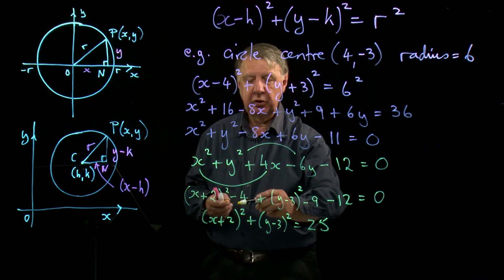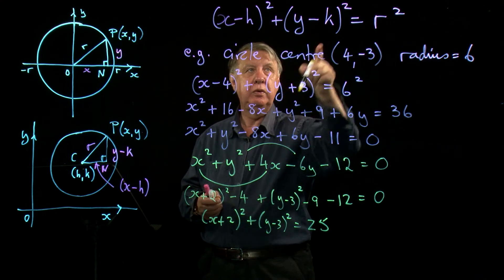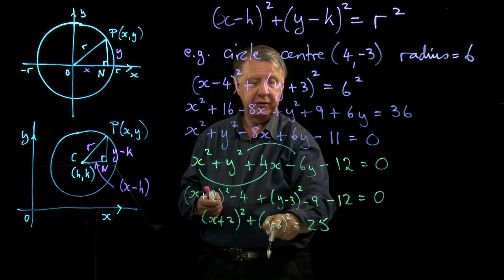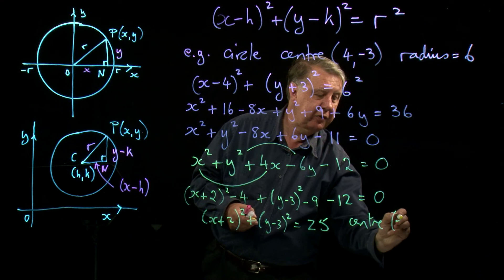Now with one eye on our version up here, we can see that this will end up looking like this. Because if I write that as X plus 2 squared plus Y minus 3 squared equals, now we'll put the numbers on the other side, 4 and 9 is 13, 25 becomes plus 25. And that's it.